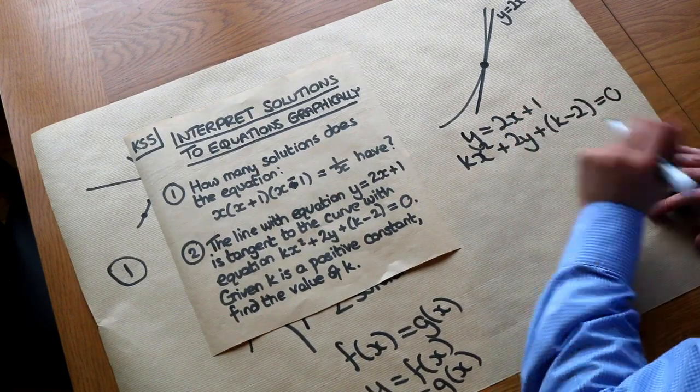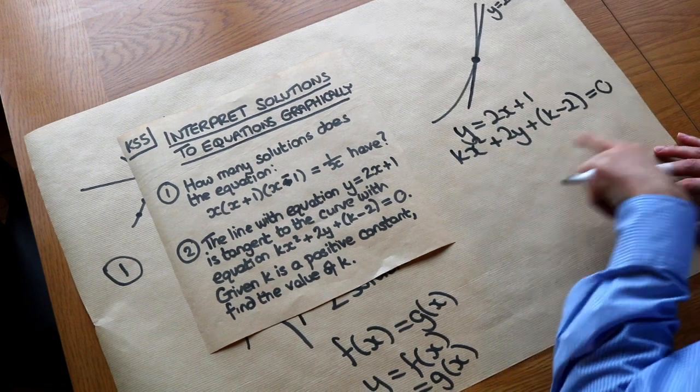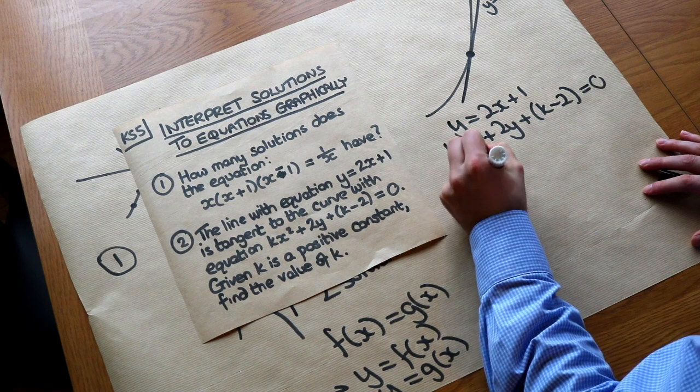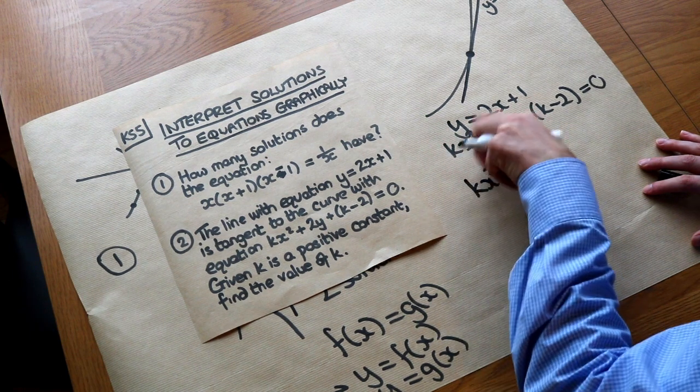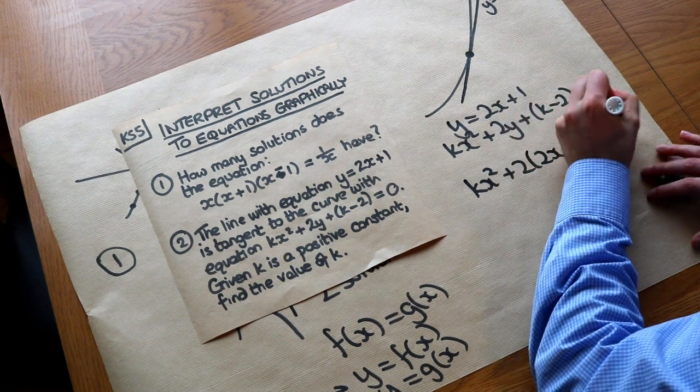So we've got quadratic simultaneous equations here. And the way to solve that is to substitute the linear equation into the quadratic one. So if we do that, we've got kx squared plus 2y, where y is 2x plus 1, plus the k minus 2 equals 0.